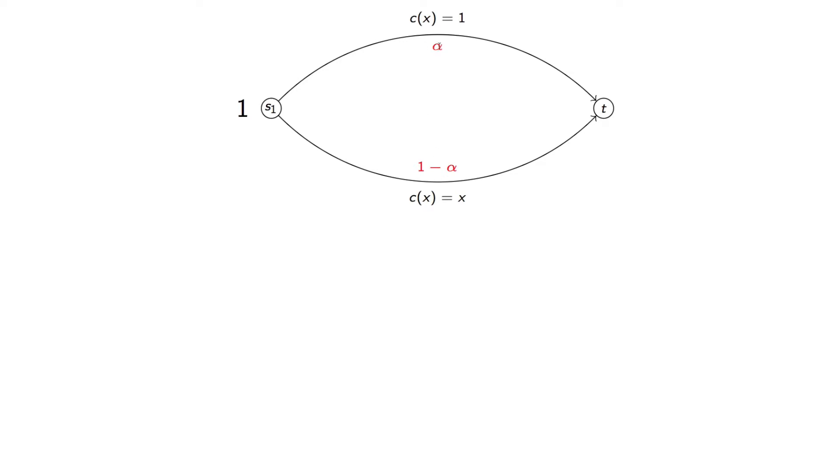And so our problem is akin to finding an alpha, which says how much of the traffic must go along this edge, and how much of the traffic must go along this edge.